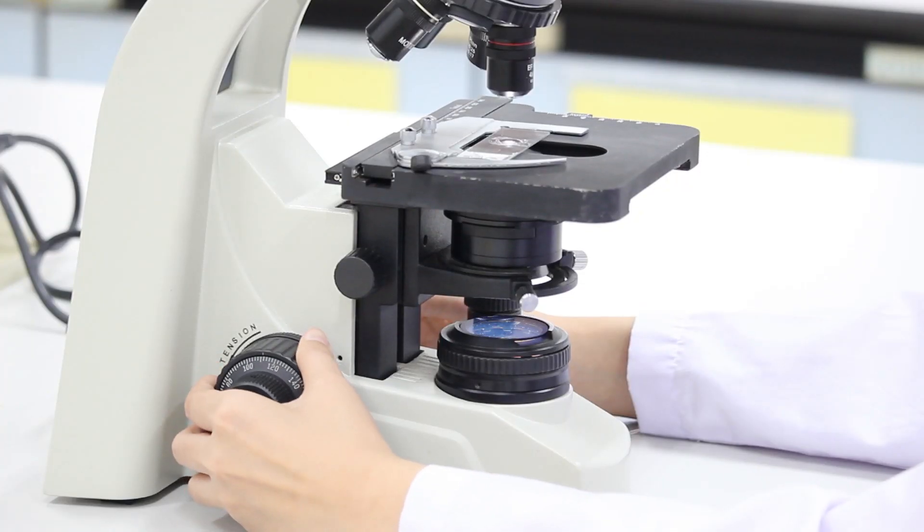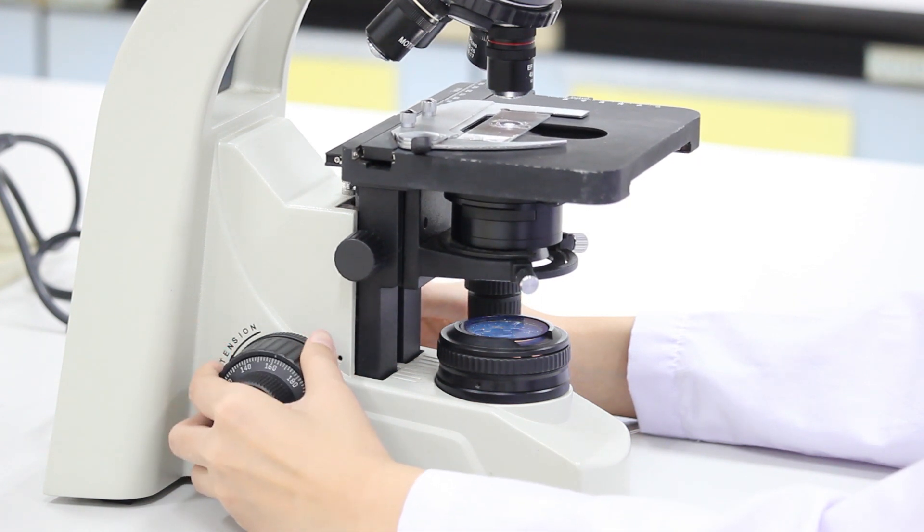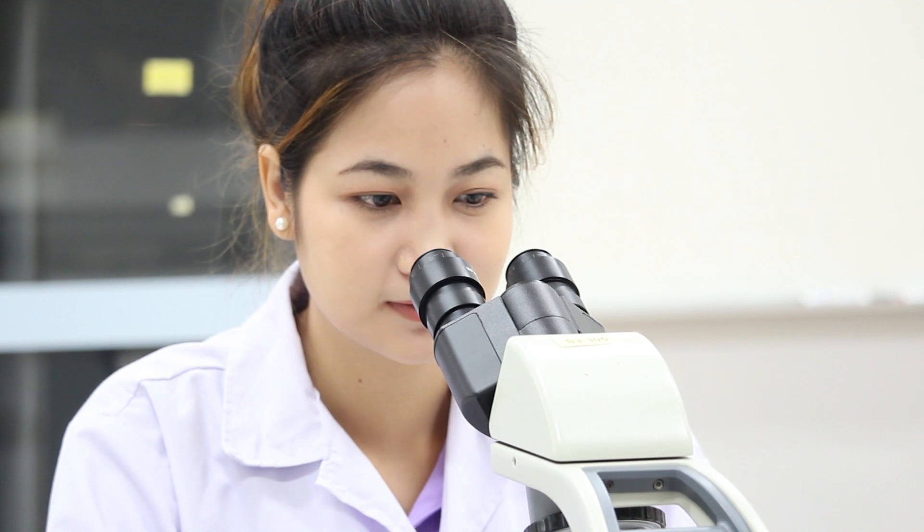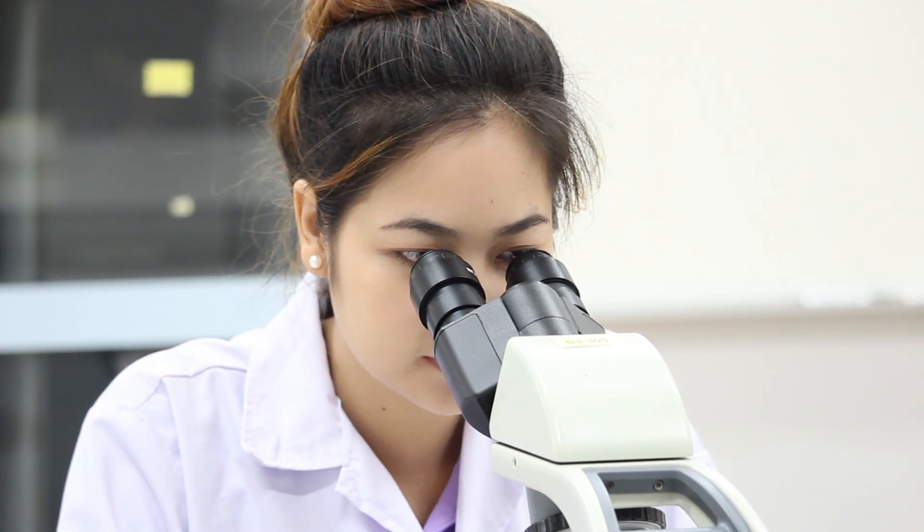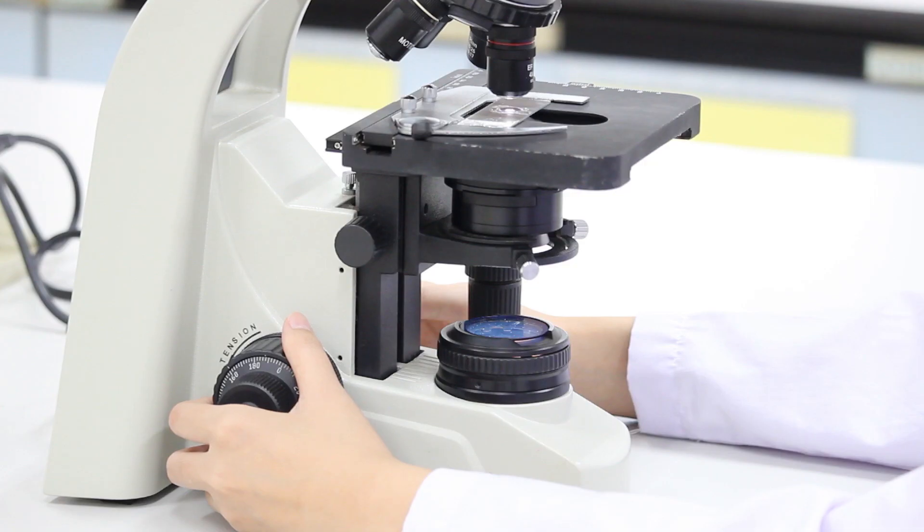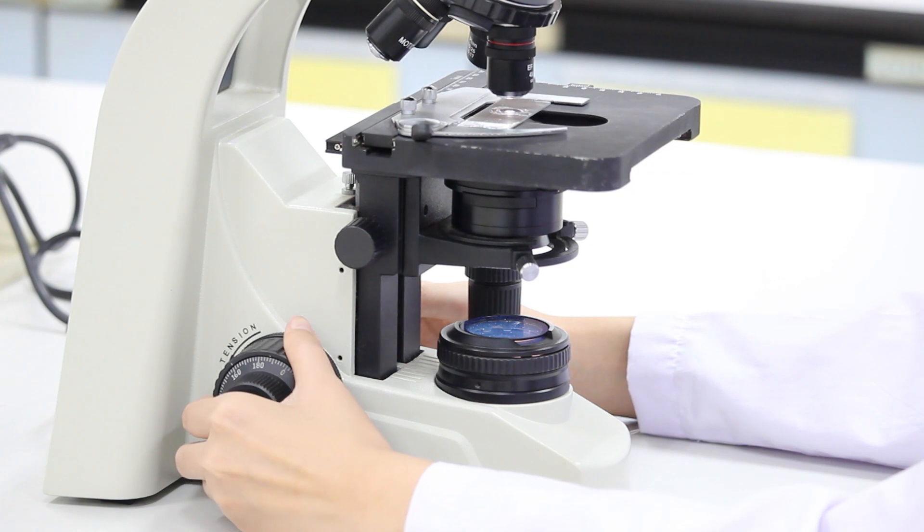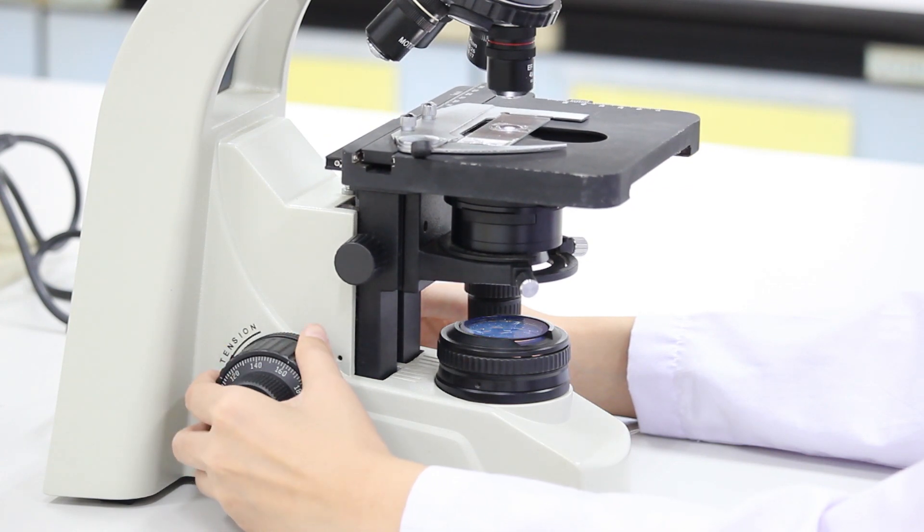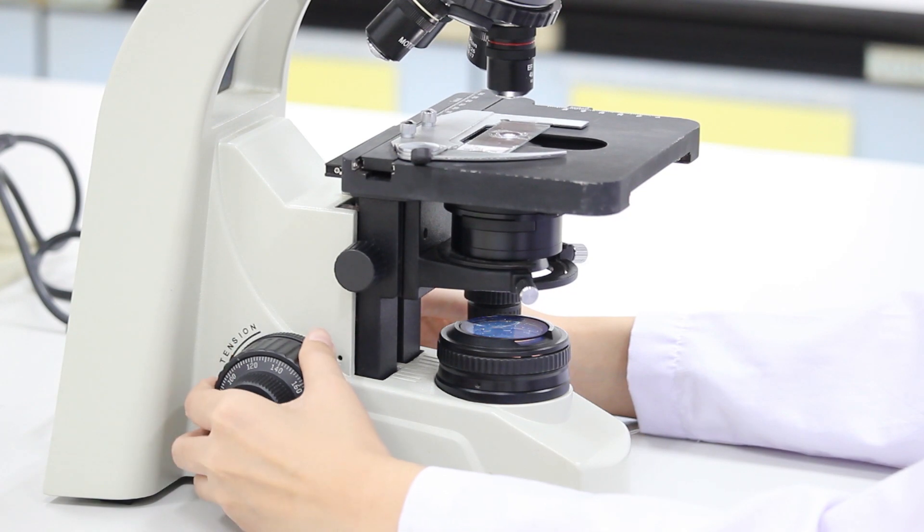Rotate the coarse adjustment knob to move the stage within 1 cm of the objective. Then, look through the eyepieces with both of your eyes open. Rotate the coarse adjustment knob to move down the stage until the image comes into focus.